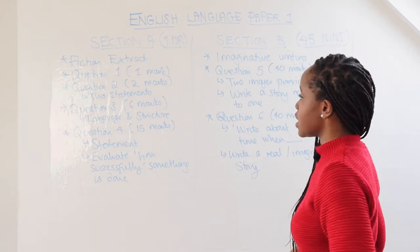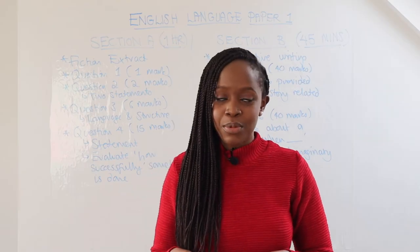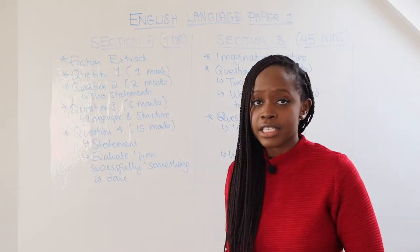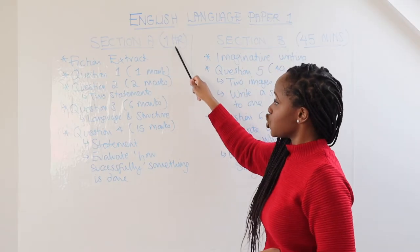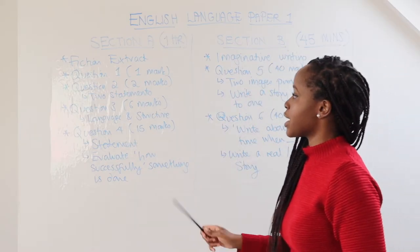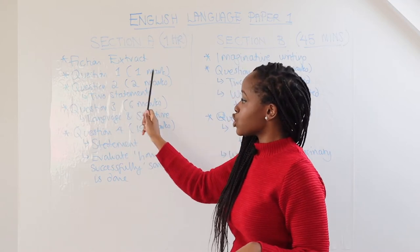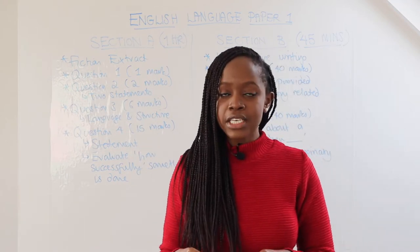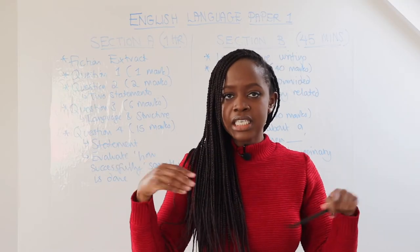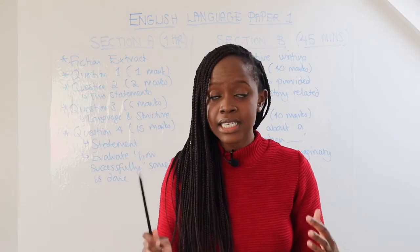As you can see behind me, I've created a brief chart of what to anticipate for this paper. You've got section A, where you should try to spend one hour, and section B, where you want to spend around 45 minutes. In section A, you get a fiction extract. For question one, which is just one mark, I recommend spending no more than a minute. You just write one brief sentence answering the question.